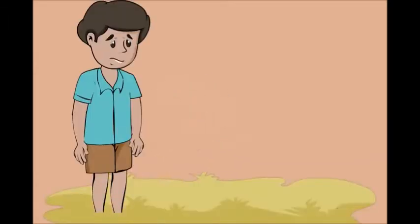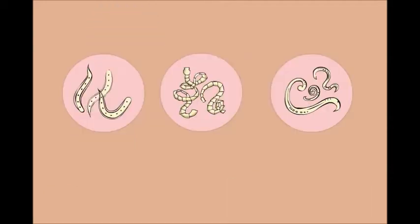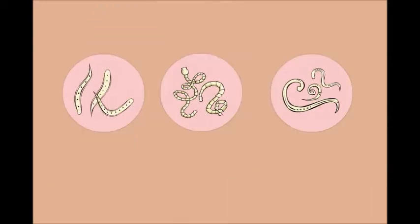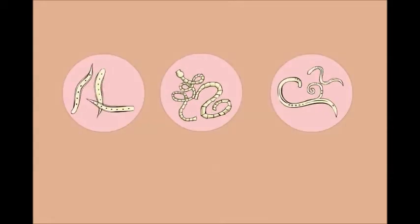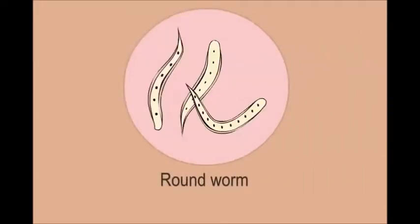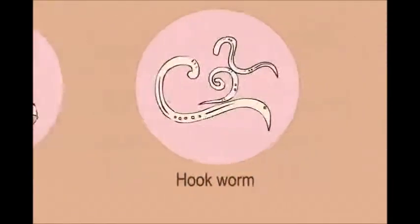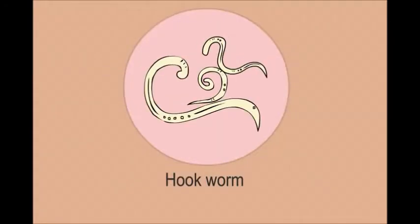Worms are organisms that thrive by taking nutrition from the human intestine. Three types of worms are most commonly found in children: roundworm, whipworm, and hookworm.